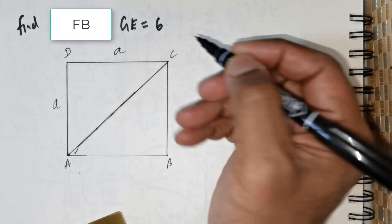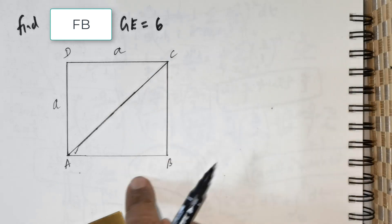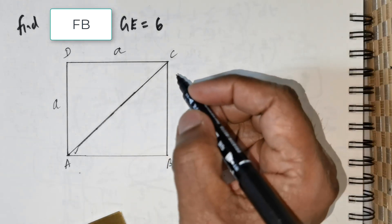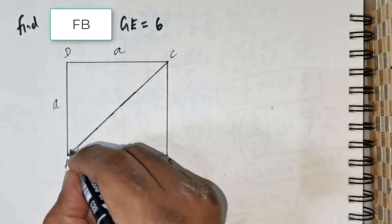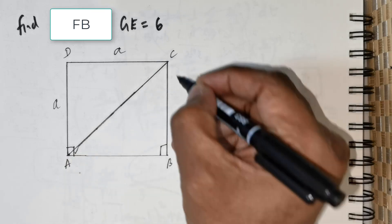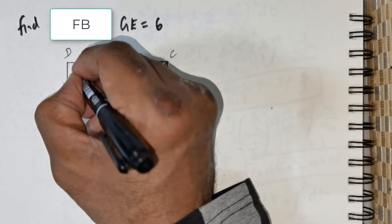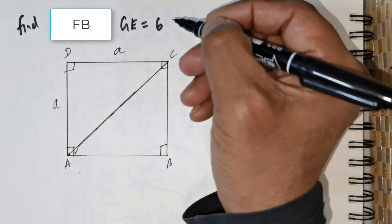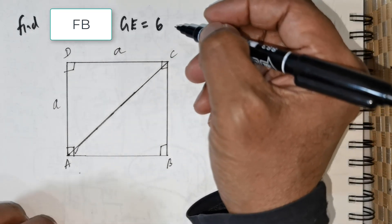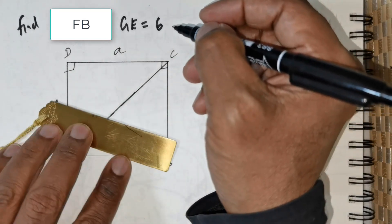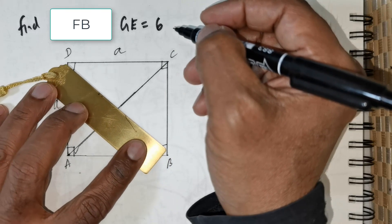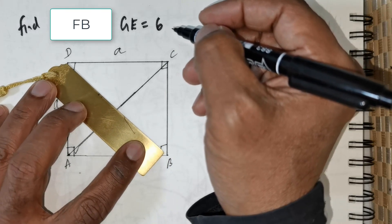So this side is going to be A, this is going to be A, obviously this is A, this is A. Now each of these angles is 90 degrees — 90, 90, 90 — and exactly at D we have the diagonal.